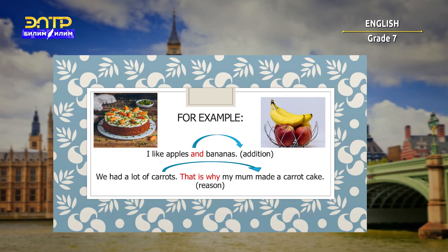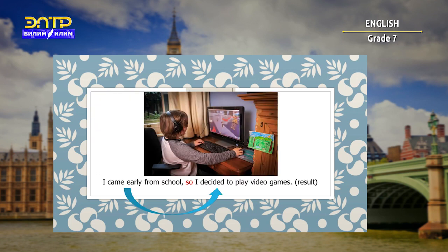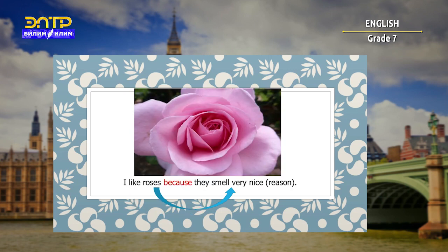Or: we had a lot of carrots, that is why my mom made a carrot cake. That is a reason linking word — 'that is why'. Another example: I came early from school, so I decided to play video games. It is a result linking word. Also: I like roses because they smell very nice. 'Because' is a reason linking word.